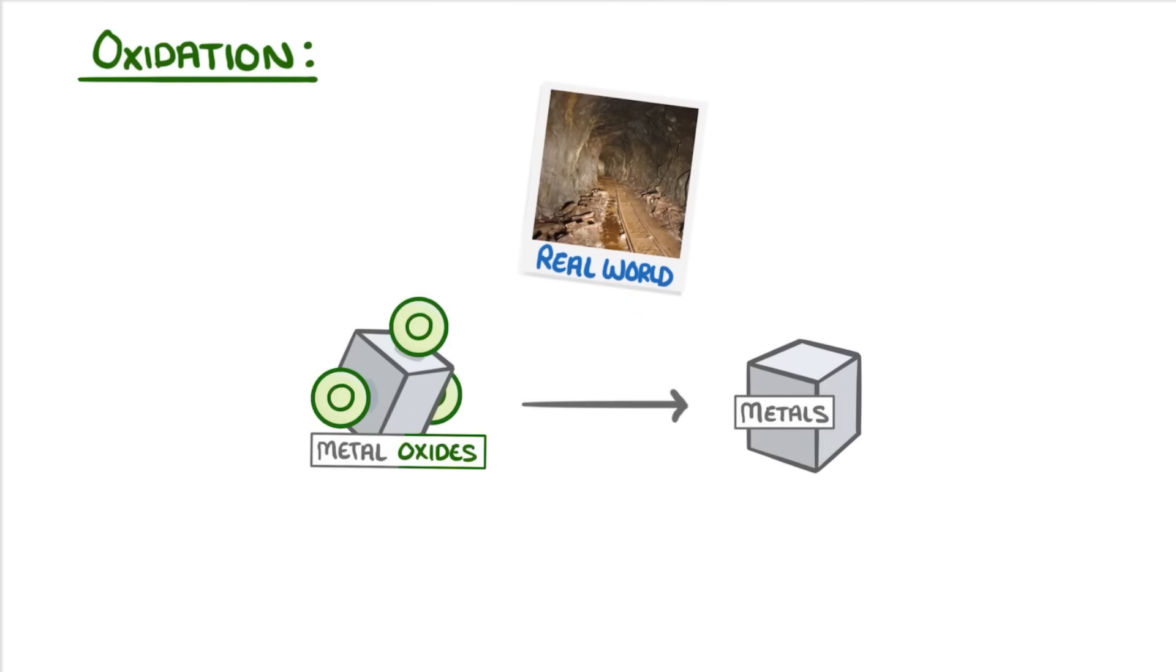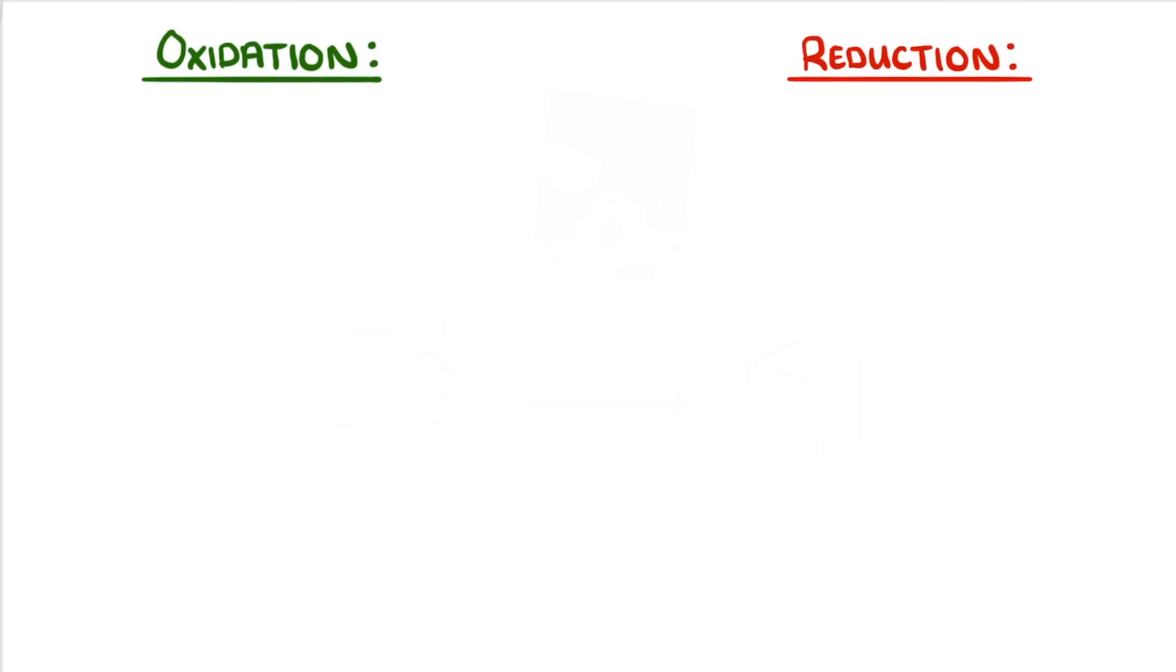First though, we need to cover the terms oxidation and reduction. Oxidation refers to the process of gaining oxygen. For example, if we combined magnesium with oxygen to form magnesium oxide, we could say that we oxidized the magnesium.